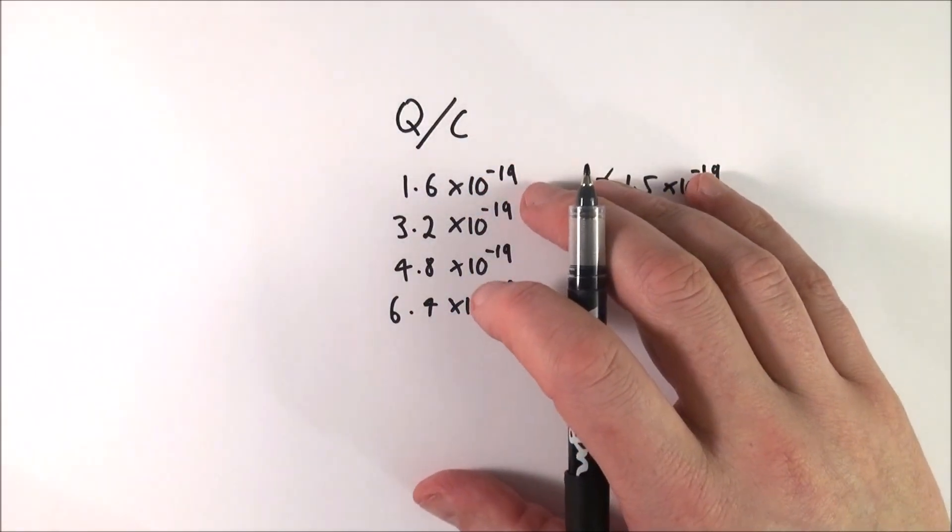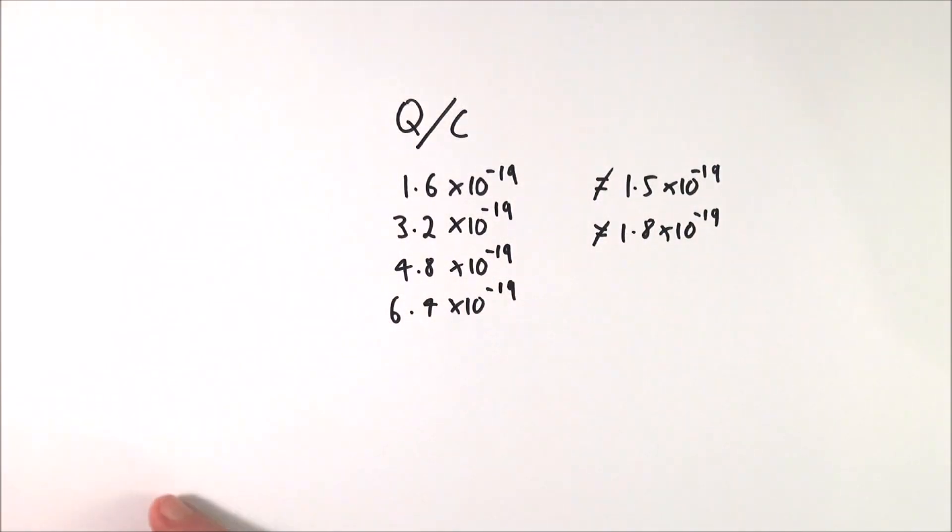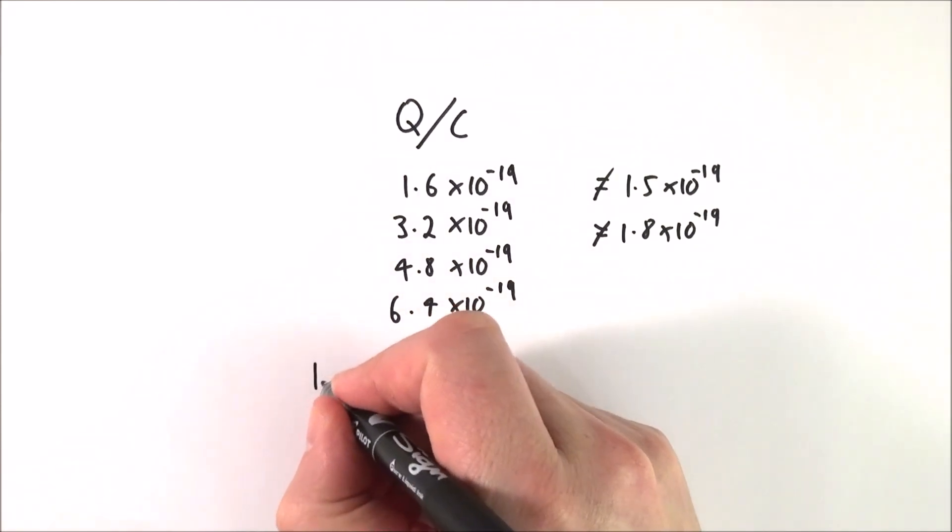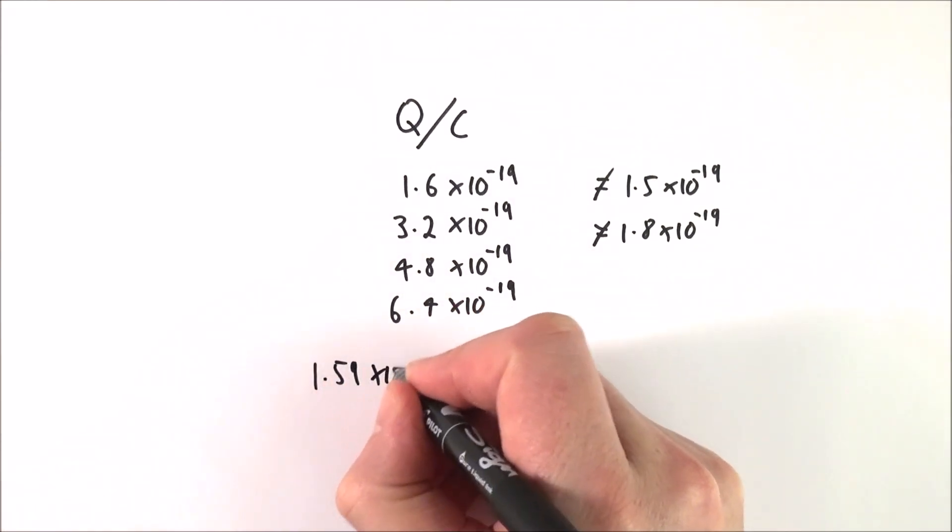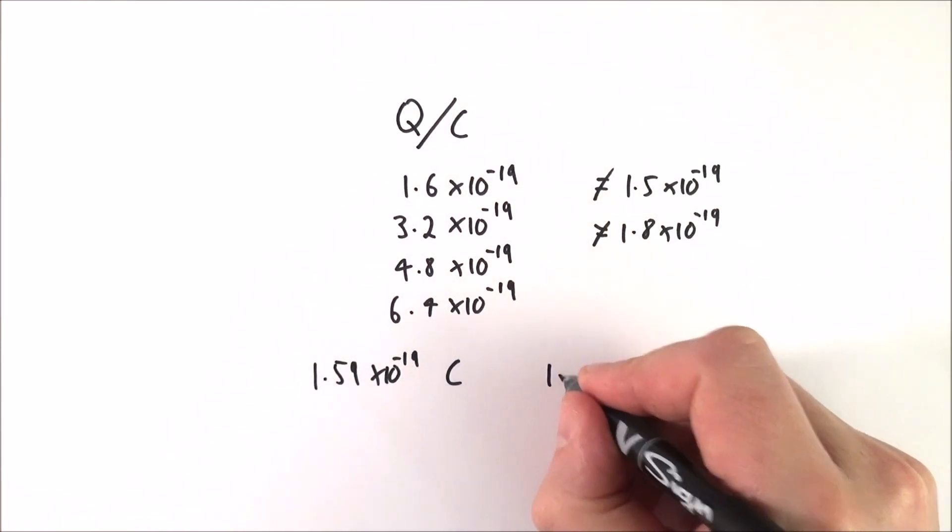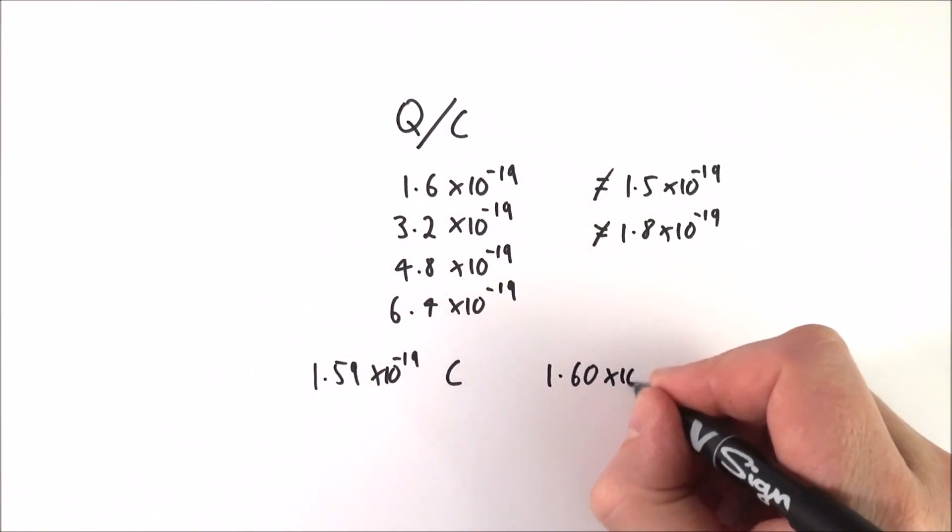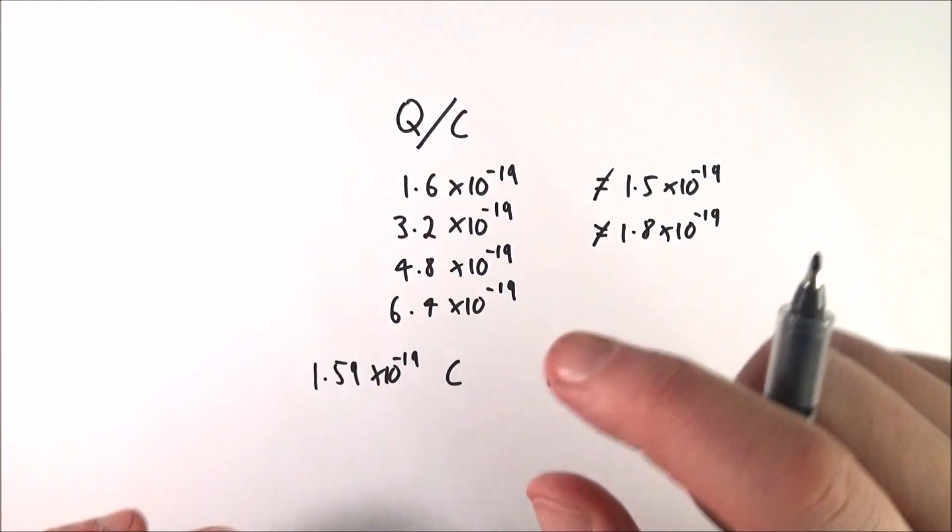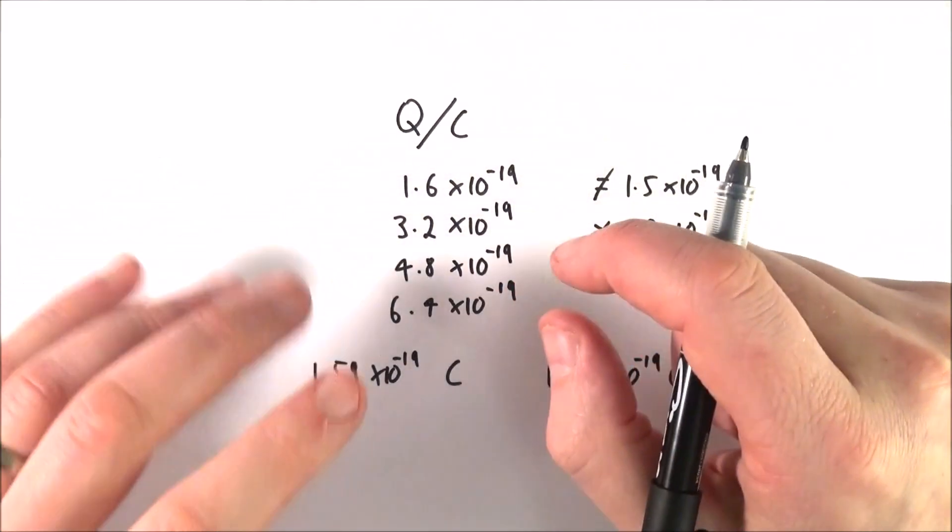And in actual fact, even though he did the experiment in 1913, so over 100 years ago, and there were so many errors that could have been introduced in the experiment, the answer that he got was about 1.59 times 10 to the minus 19 Coulombs. Whereas nowadays we know that the answer is closer to 1.60 times 10 to the minus 19. So actually his answer was very, very close. And it was in 1923 that he was awarded the Nobel Prize for his work.